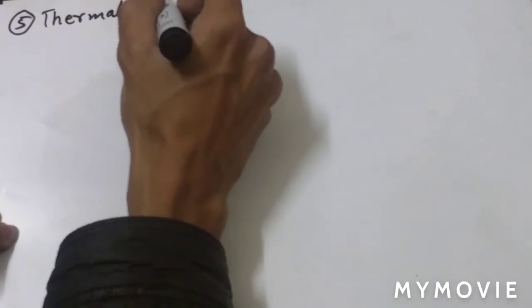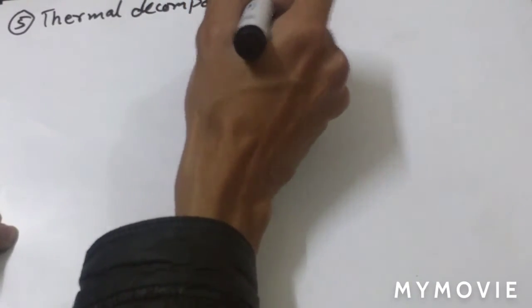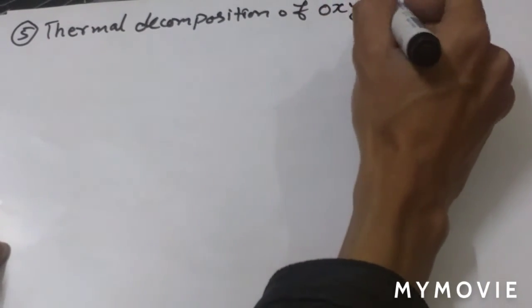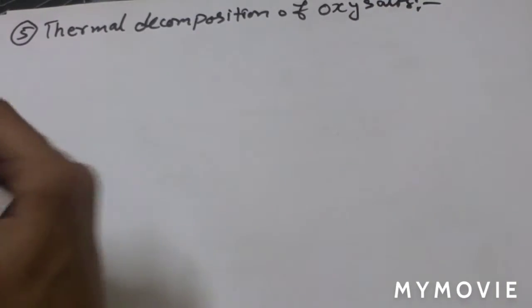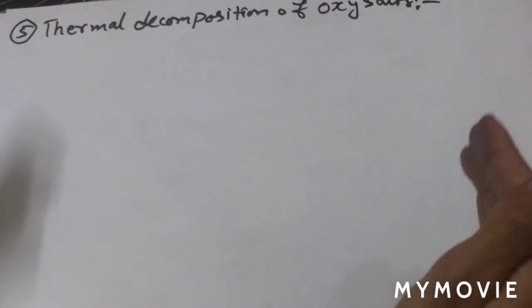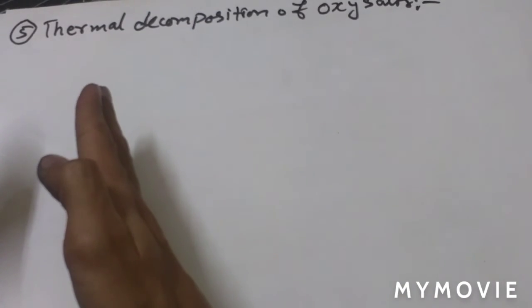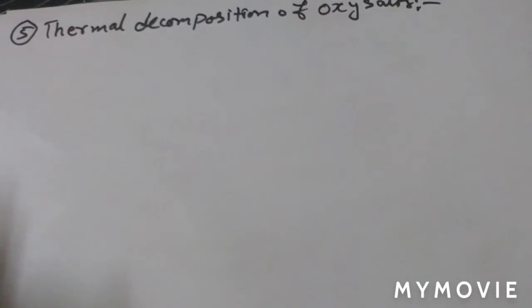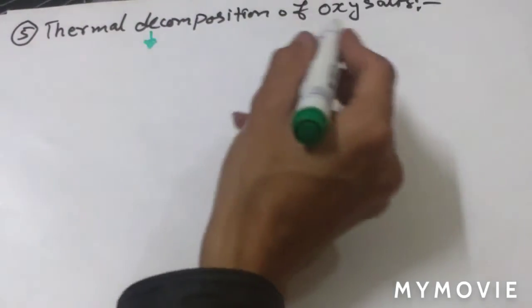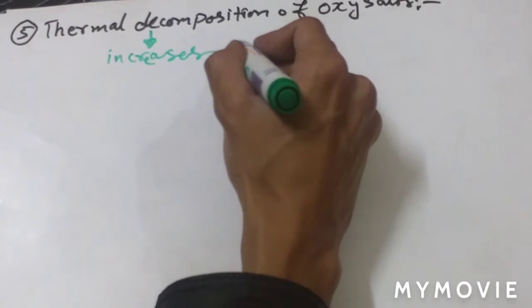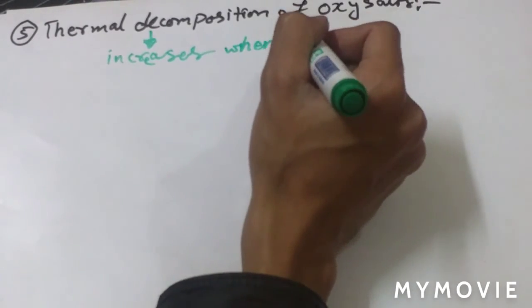Thermal decomposition of oxy salts: when we move from right to left in a period — that is, as size increases — the thermal decomposition of their oxy salts increases. Conversely, thermal decomposition of oxy salts increases when size decreases.